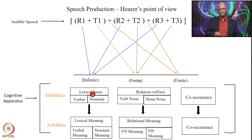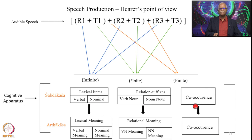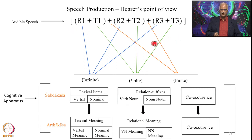These items in the Shabdakasha give rise to the Arthakasha — lexical meaning, verbal and nominal. The suffixes give rise to relational meaning: verb-noun and noun-noun meaning. The co-occurrence gives rise to the co-occurrence of meaning, and then the communication process comes to an end where the hearer understands the import of the audible speech. This is how the process of speech production at the intellectual level can be described.